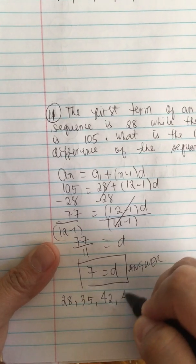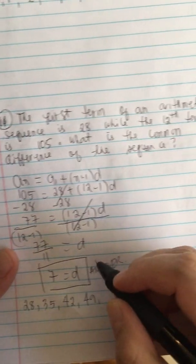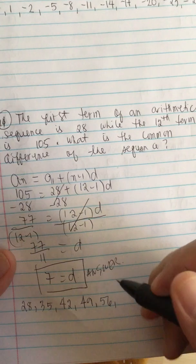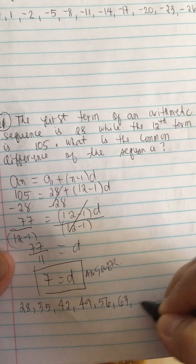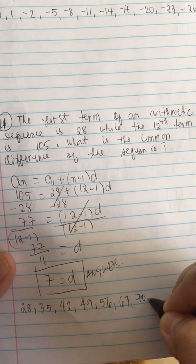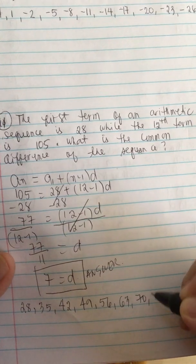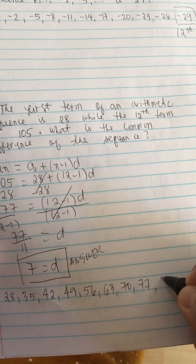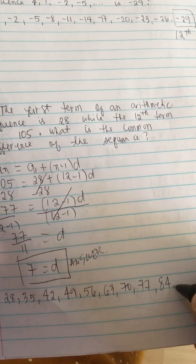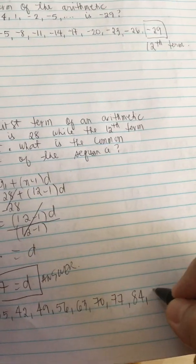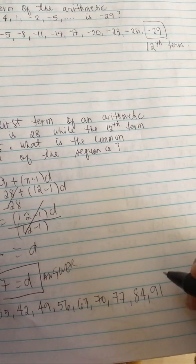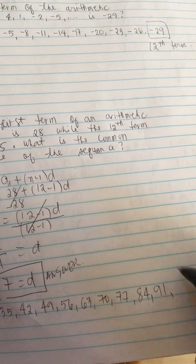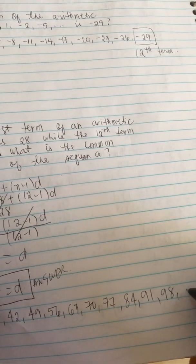Plus 7 is 56. Plus 7 is 63. Plus 7 is 70. Plus 7 is 87. Plus 7 is 84. Plus 7 is 84. Plus 7 is 91. And plus 7 is 98. And plus 7 is 105.